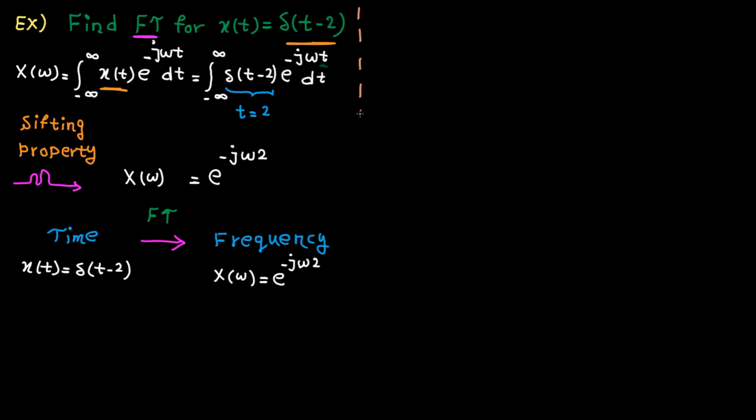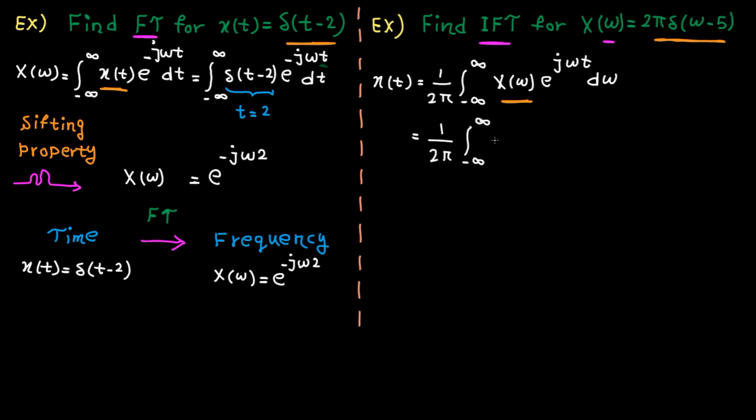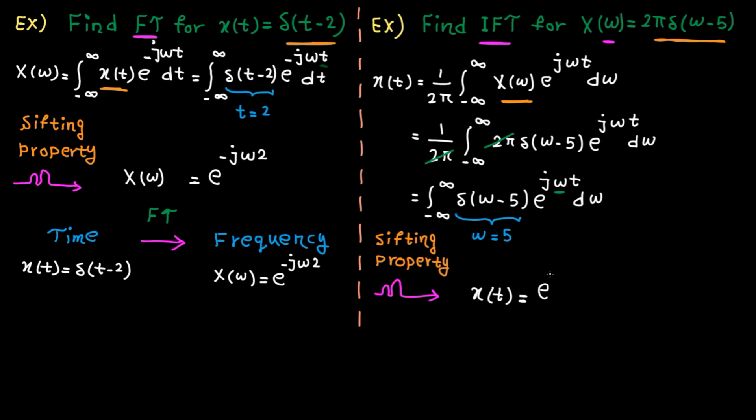Now, let's practice inverse Fourier transform. Example, find inverse Fourier transform for this signal. This signal is in the frequency domain and we want to travel to time domain using inverse Fourier transform. Here is the integral for inverse Fourier transform. Let's replace X omega by this signal. 2 pi is cancelled by 2 pi and here is what we get. This function is non-zero only at omega equal to 5. Again, based on sifting property, we just need to replace omega by 5. Here is the final answer.